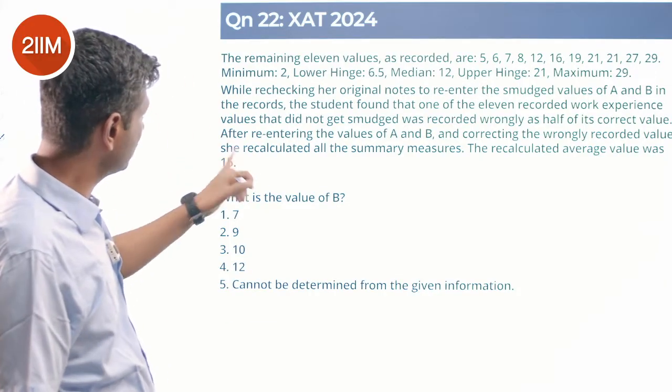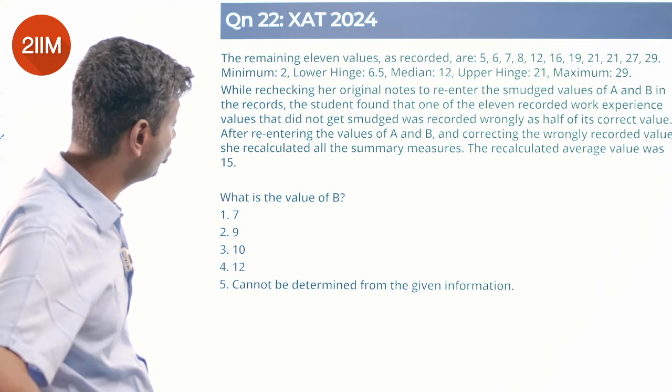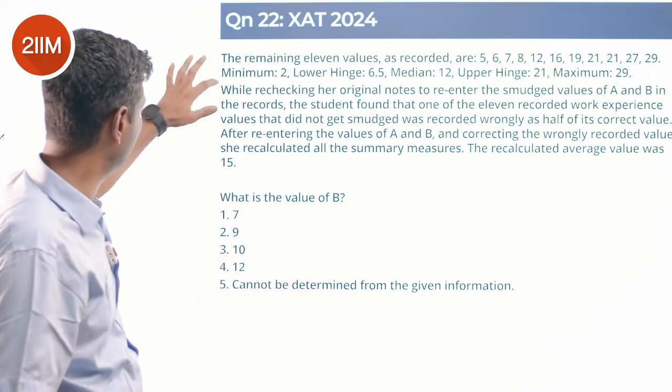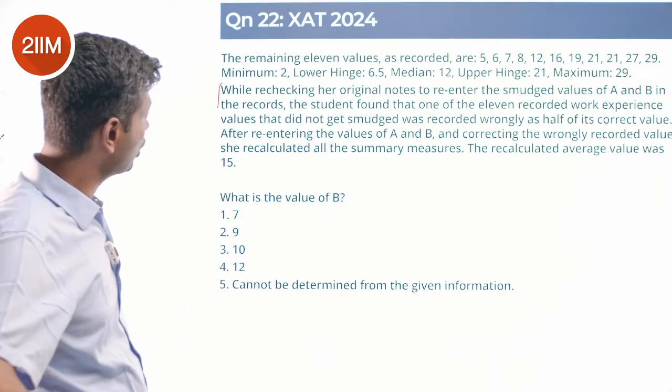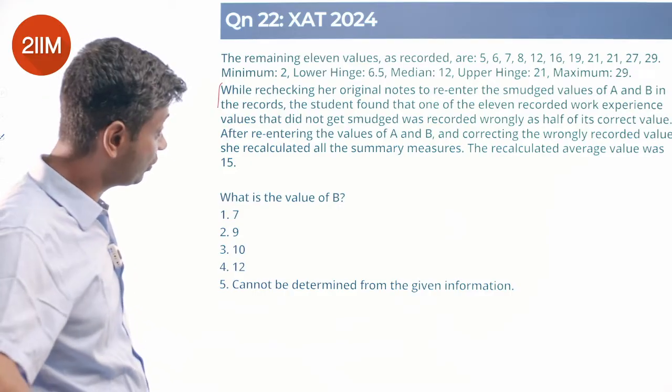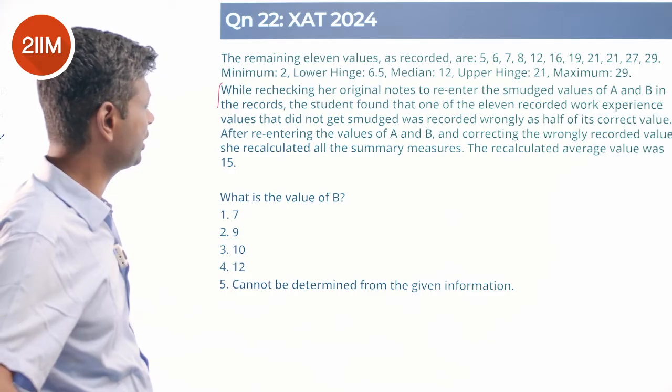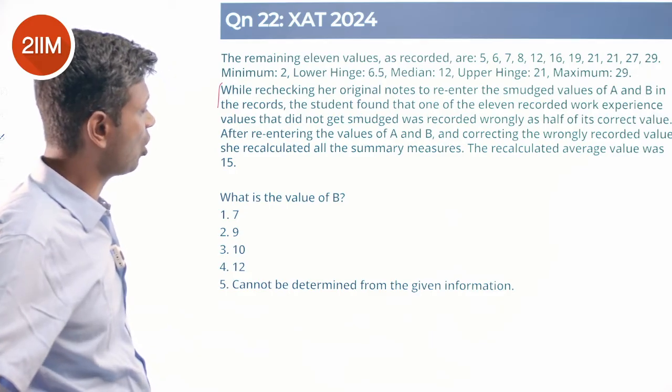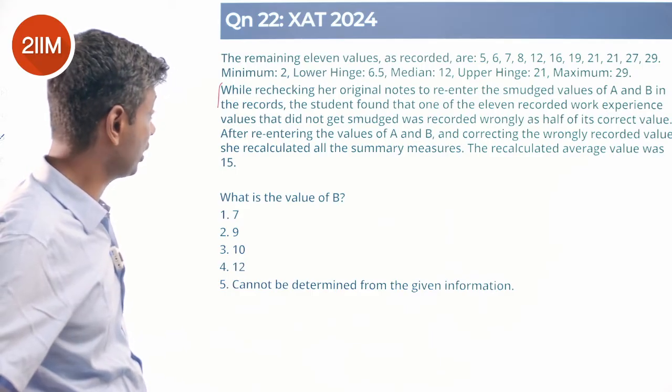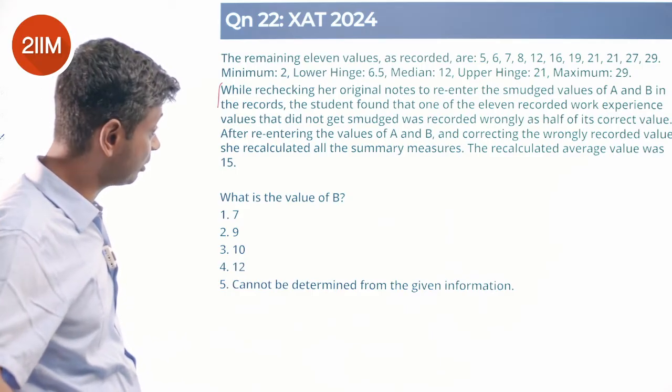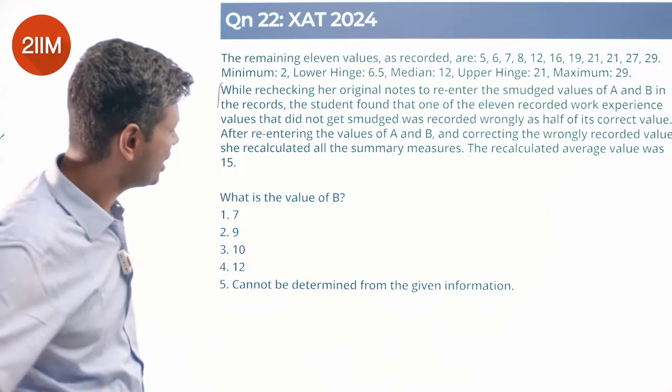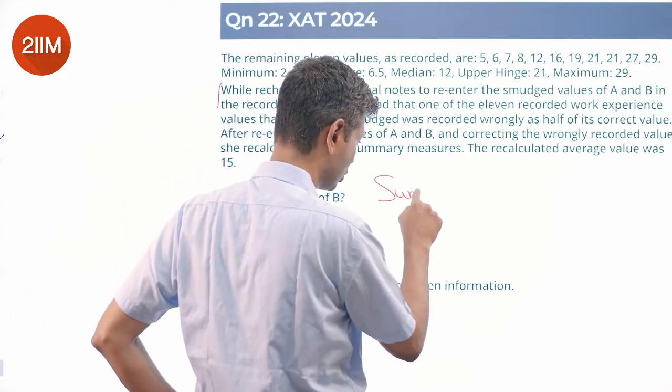After re-entering the values of A and B and correcting the wrongly recorded value. So we read from here: While re-checking her original notes to re-enter the smudged values of A and B in the records, the student found that one of the 11 recorded work experience values that did not get smudged was recorded wrongly as half of its correct value. After re-entering the values of A and B and correcting the wrongly recorded value, she recalculated all the summary measures.